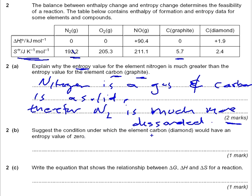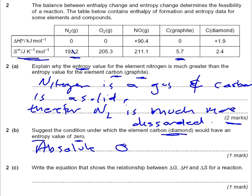Suggest a condition under which the element carbon, diamond, would have an entropy value of zero. The first time I saw this, I didn't actually read 'diamond' and thought about how to get carbon's entropy to zero by making it diamond — because diamond has all the bonds joined together with no sliding sheets. But it's already talking about diamond, so the only other way to drop entropy to zero is at absolute zero — zero Kelvin, or minus 273 degrees Celsius. However, at zero Kelvin, entropy just doesn't exist.